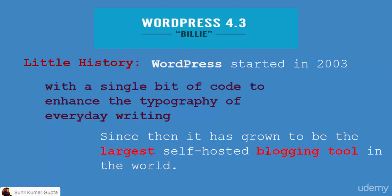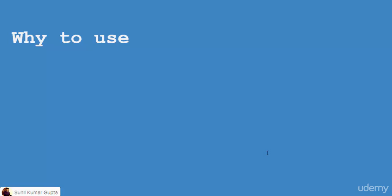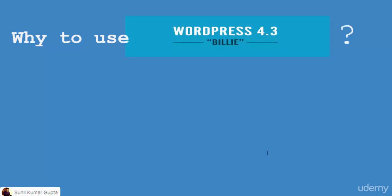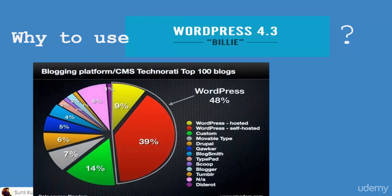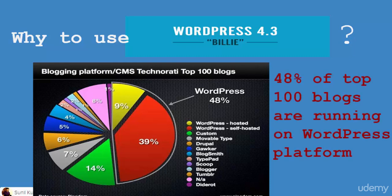Since then it has grown to be the largest self-hosted blogging tool and content management system in the world. You may ask why use WordPress. I'll show you this picture — look at this graph. Around 48 percent of blogs are running on the WordPress platform, while all other platforms and software together contribute 52 percent. WordPress alone has 48 percent, and that itself says why everybody should use WordPress.